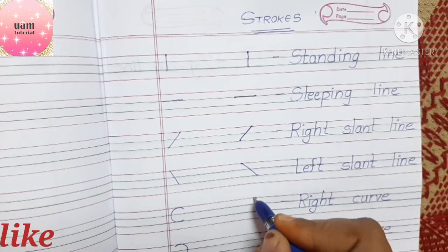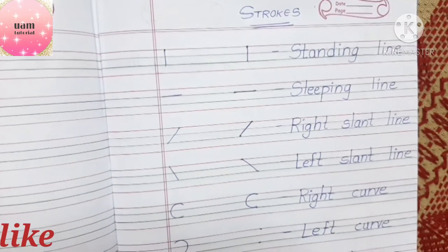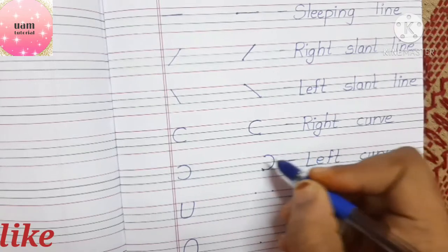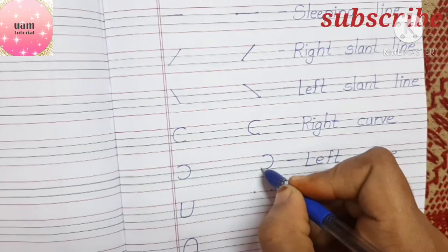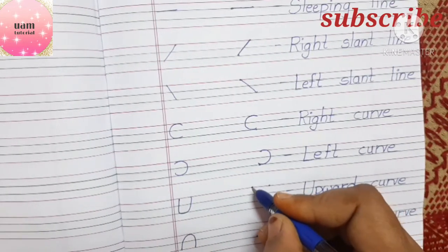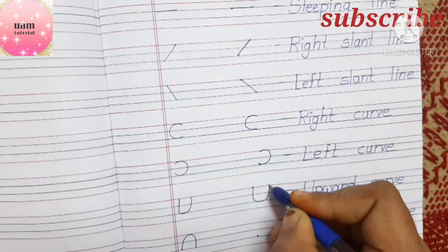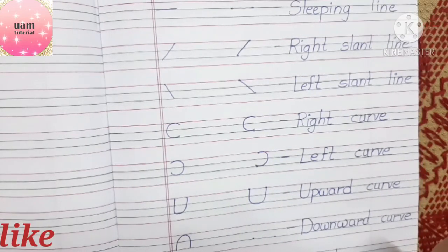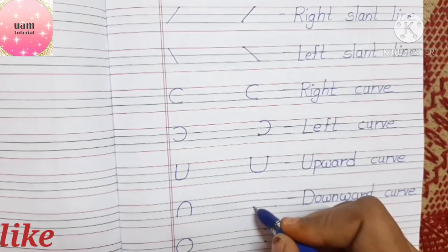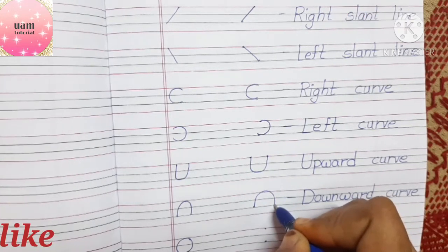Now this is our right curve — it's open on our right side. Next is our left curve. The upward curve goes from the first line touching the third line, then back upwards to the first line. The downward curve starts from the third line, goes upwards, then comes back down to the third line.